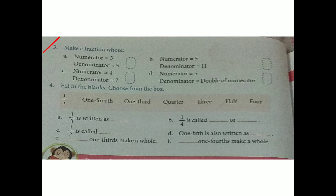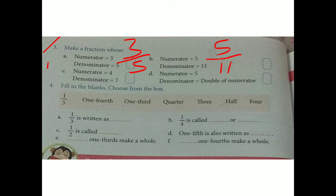Question number 3: make a fraction with both numerator and denominator. Numerator and denominator are given; you have to write the fraction in upon form. Numerator 3 is always on the upper part, so 3 upon 5. For B, numerator 5 upon 11. For C, numerator 4, denominator 7 — so 4 upon 7. For D, numerator is 5 and denominator is double of numerator, so double of 5 is 10 — giving 5 upon 10.